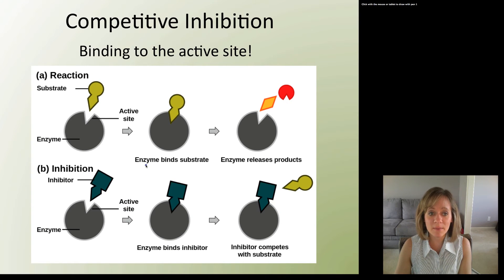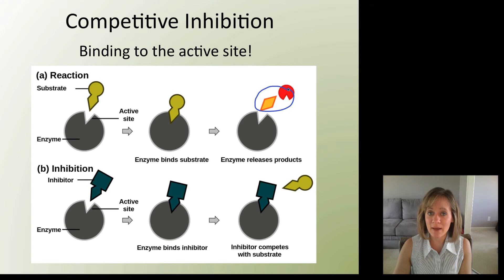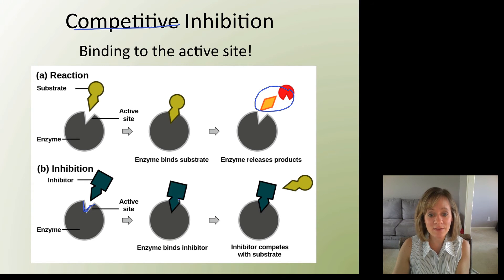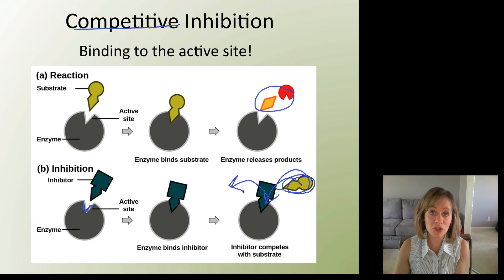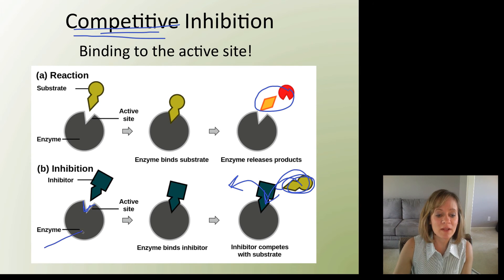Here's an example of competitive inhibition. In a normal reaction, the enzyme, substrate, and active site work together to produce products. But in competitive inhibition, the inhibitor actually binds directly to the active site, competing with the substrate for that site. The substrate can no longer get in and can no longer be turned into product. Non-competitive inhibition is when the inhibitor binds to an allosteric site instead.